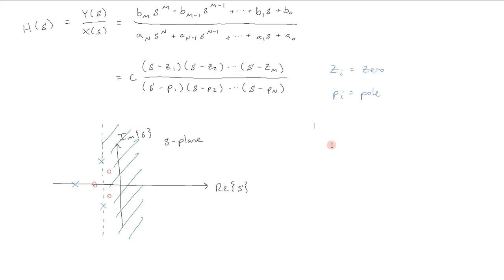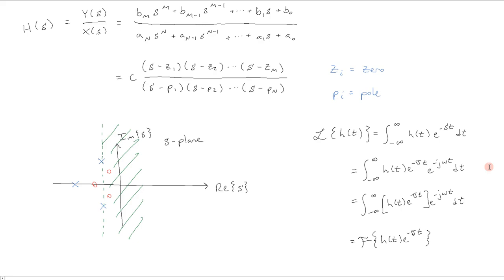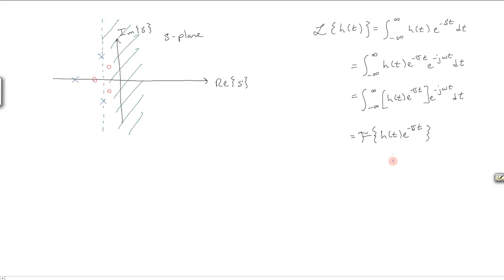We can see this by looking at the definition of the Laplace transform, and once again, recognizing that the Laplace transform is the Fourier transform of h pre-multiplied by e to the minus sigma t. Well, we can furthermore see that if sigma is equal to zero,